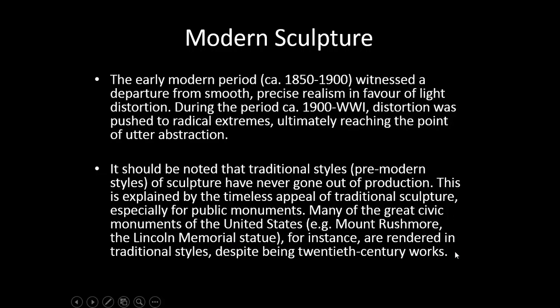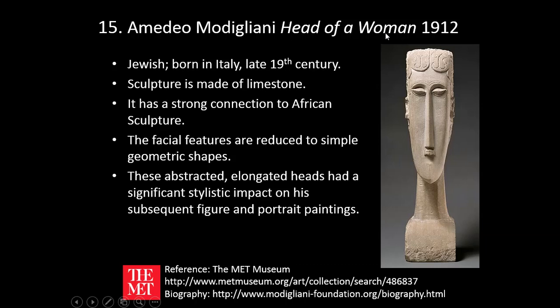Number fifteen — Amedeo Modigliani, Head of a Woman, 1912. Modigliani was Jewish, born in Italy in the late 19th century. The sculpture is made of limestone and has a strong connection to African sculpture. The facial features are reduced to simple geometric shapes. These abstracted, elongated heads had a significant stylistic impact on his subsequent figure and portrait paintings.